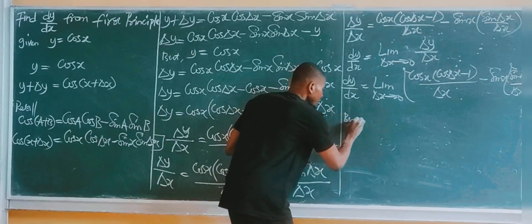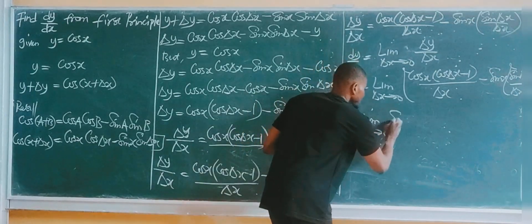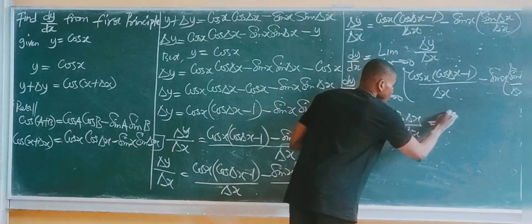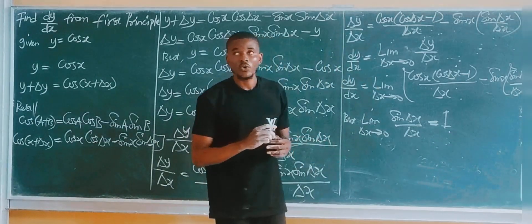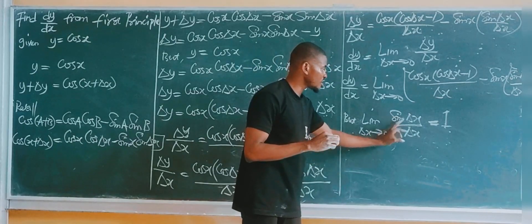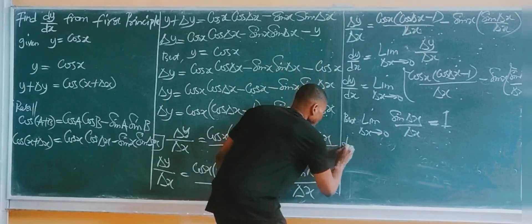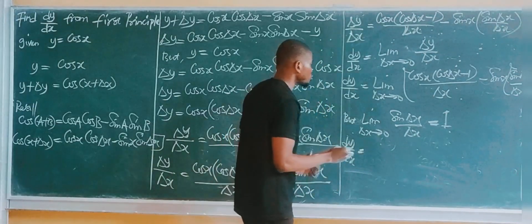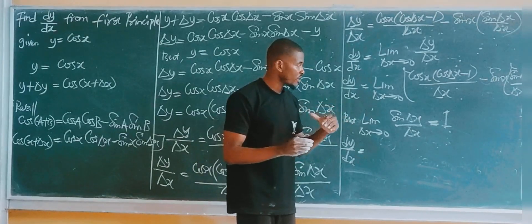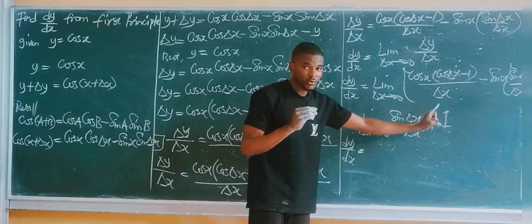Now the limit as Δx tends to 0 of sin(Δx) over Δx is actually equal to 1 — this is a standard result. Also note that sin(Δx) over Δx equals 1. So putting the value of Δx equal to 0 everywhere — wherever we see Δx we substitute 0.